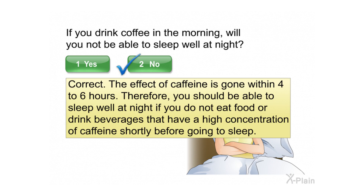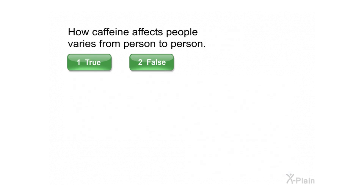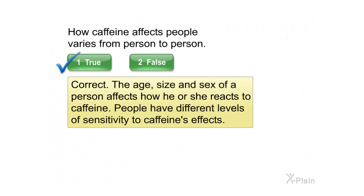If you do not eat food or drink beverages that have a high concentration of caffeine shortly before going to sleep. How caffeine affects people varies from person to person — select true or false.